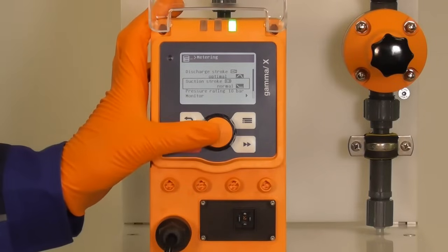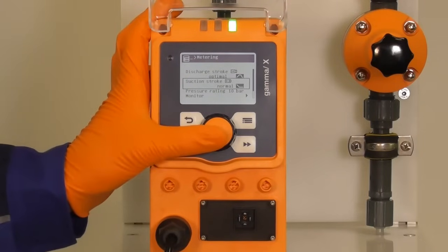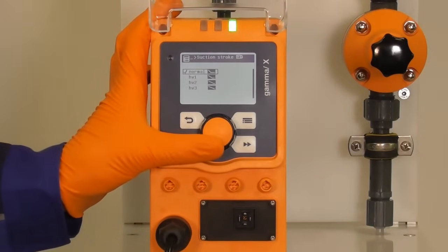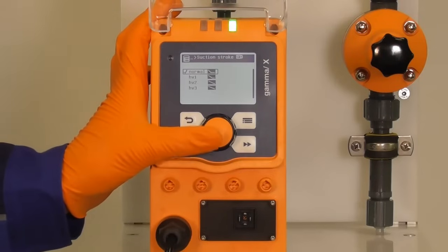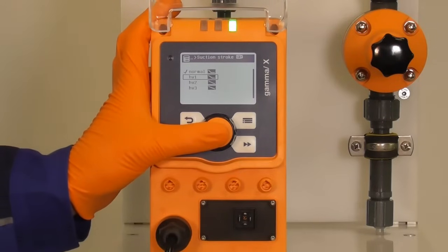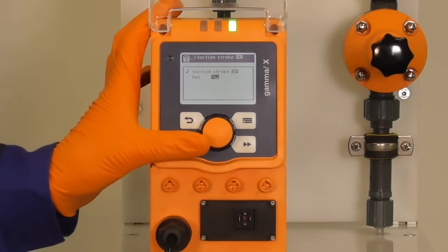Depending on the viscosity you just select different suction strokes. If your viscosity is between 200 and 500 mPa you select high viscosity 1. Then the pump is doing maximum 160 strokes per minute.